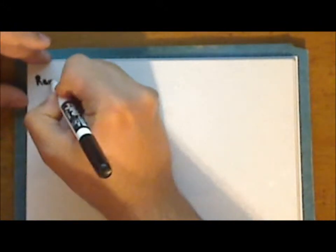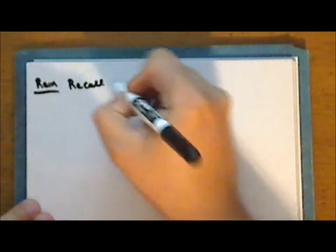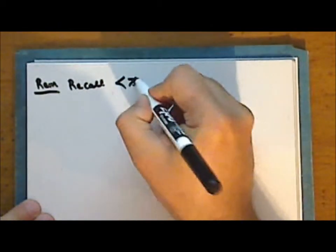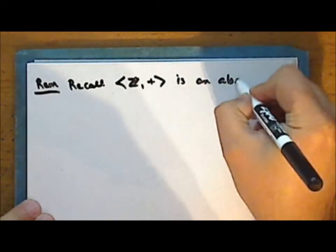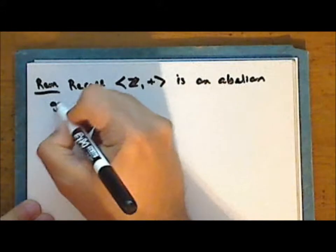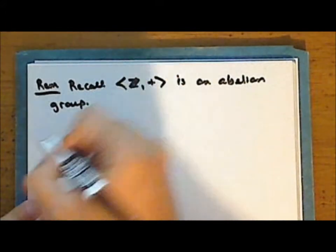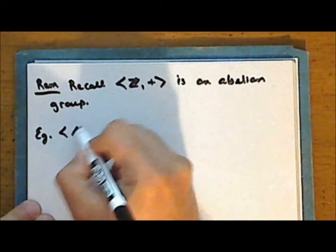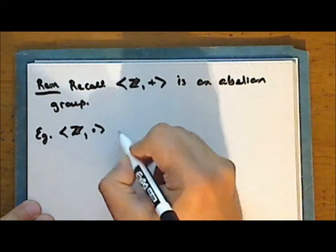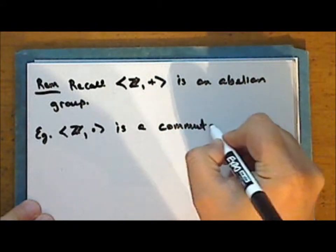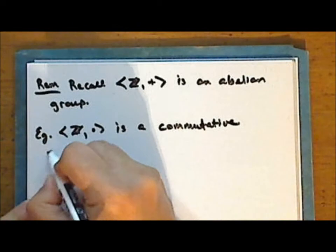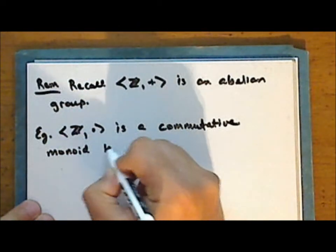We will begin this lecture by consolidating some of the algebraic properties of the integers. Recall that the integers under addition is an Abelian group. Next we'll show that the integers under multiplication is a commutative monoid but is not a group.